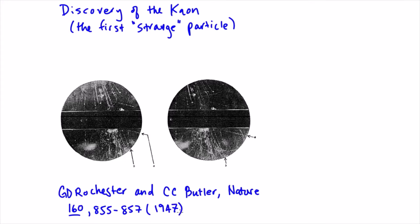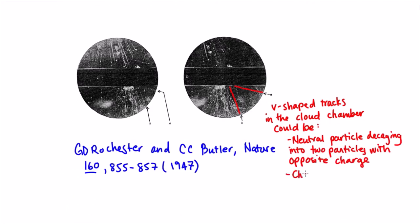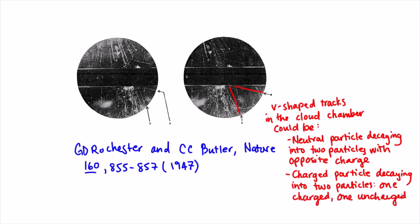So what was strange about kaons? Well, kaons and other strange particles were known as v-particles because they produced a characteristic v-shaped decay track within a cloud chamber, like the one shown in this cloud chamber picture here. These v-shapes were consistent with two possibilities. Either they were neutral particles decaying into two particles with opposite charge, or they were charged particles decaying into two particles, one charged and one uncharged. Basically, these v-shapes looked like they were characteristic of a decay process.